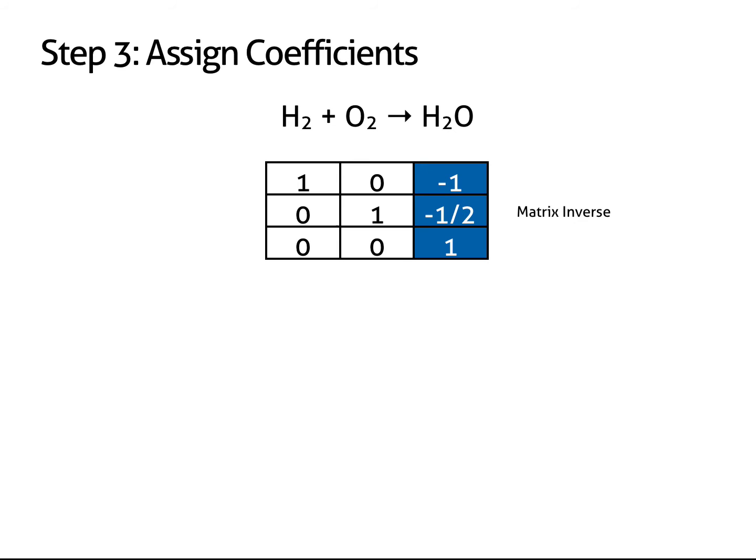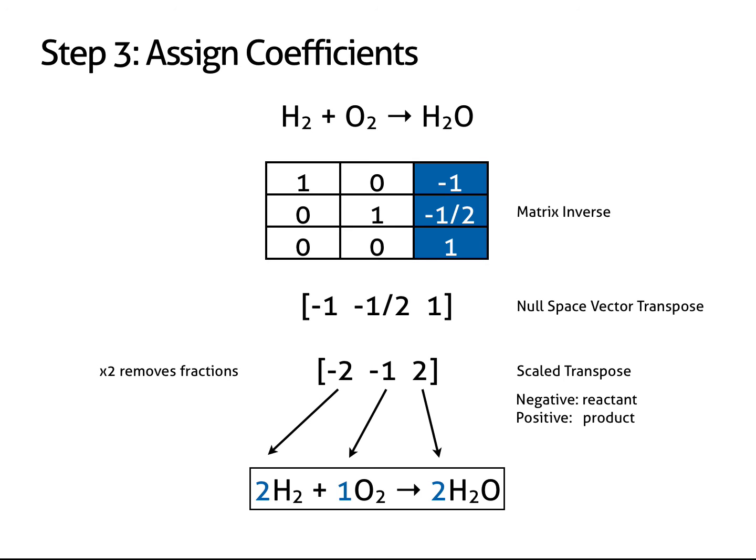To assign coefficients, take the right-hand column of the matrix inverse and lay the numbers out in a row, starting from the top and working down. Next, multiply every number by the smallest number needed to remove all fractions. In this case, the number is 2. We now have three numbers. The left two have a negative sign, indicating these are the coefficients for reactants. The last number is positive, indicating that this is a product coefficient. The last step is to assign coefficients from left to right using the opposite of any negative numbers.